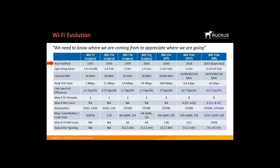Changes that will go into the standard beyond this time can all be accommodated through a software change, which is how the process works. The standard started with 2.4 GHz, then with 11n it supported both 2.4 and 5 GHz. 11ac only supported the 5 GHz band because the thinking was to encourage people to move towards 5 GHz because it was a much cleaner frequency. With 11ax, both 5 GHz and 2.4 GHz are supported.